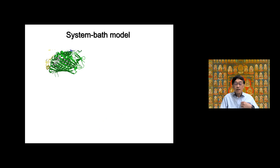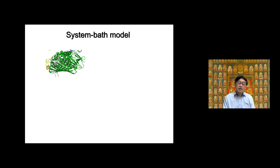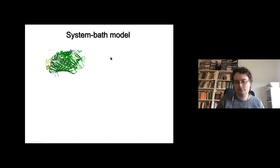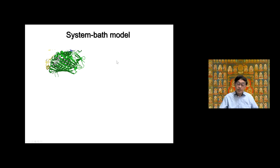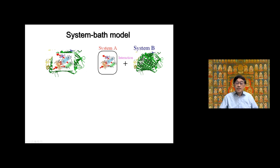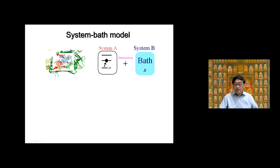First, I would like to explain the model — the system-bath model. This model has been used in a variety of contexts, but it works very well for spectra in the condensed phase. The idea is as follows: the system can be anything, but consider something like the FMO complex. The proteins are around and the chromophores are inside. The chromophore is regarded as the system, and the protein and solvation environment act as the heat bath.